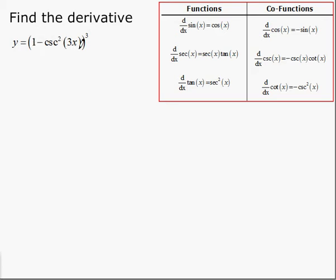Then we'll differentiate the inside part, which remained the same. We'll take the derivative of the 1, then differentiate the negative cosecant squared 3x. Again, with the chain rule, the order is very important. The 2 is the outside function, everything stays the same, then the trig function, the argument stays the same, then the argument. Making sure you use the chain rule in the correct order is what will help you get these questions right.